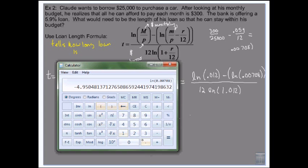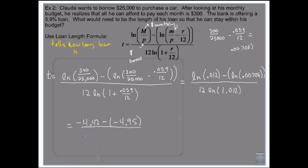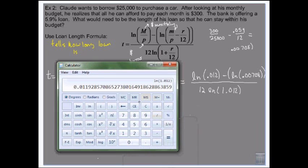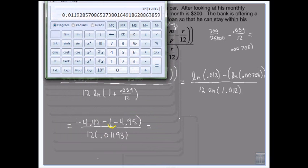And then I do 0.00708 natural log. So I'm 12 times 0.01193. Minus negative is positive. See, he's a happy, smiley man.